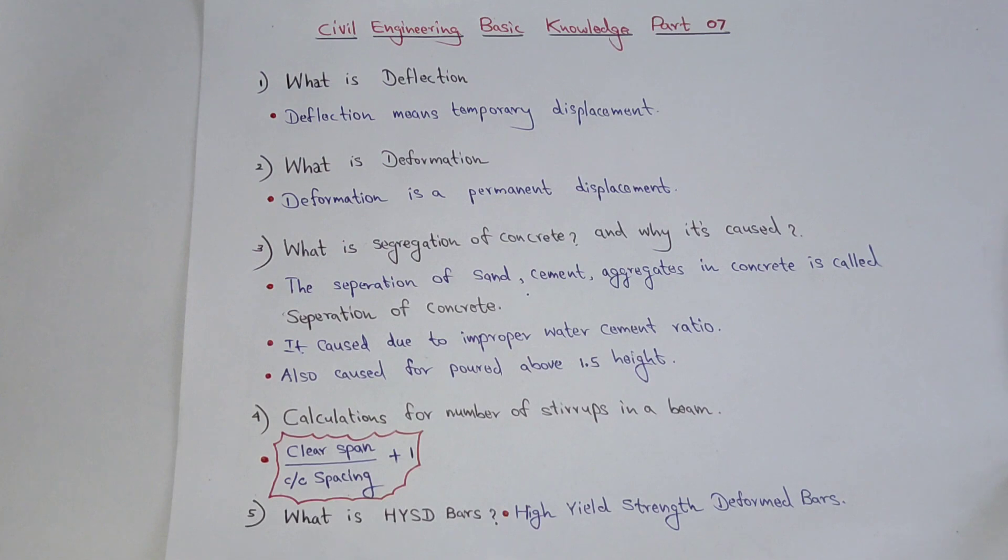There's a formula. You can calculate the number of stirrups by clear span divided by center to center spacing, plus add 1. This gives you the number of stirrups in the beam.